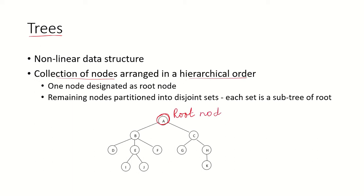The remaining nodes are partitioned into disjoint sets. This is one partition, referred to as a subtree of the root node, and this is another partition, also a subtree of the root node.